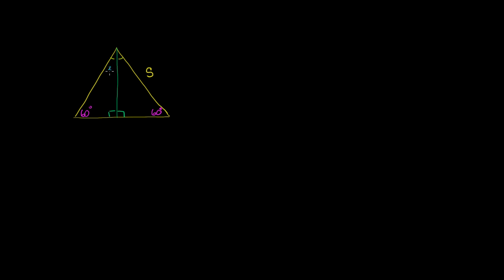In a regular equilateral triangle, all of the angles are 60 degrees. So this one right over here is going to be 60 degrees, this one down here is going to be 60 degrees, and this one down here is going to be 60 degrees. And then this one up here is 60 degrees, but we just split it in two, so this angle is going to be 30 degrees and this angle is going to be 30 degrees. The altitude right over here also bisects this side down here, so that this length is equal to that length.